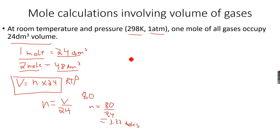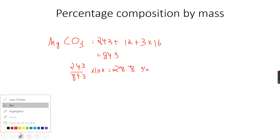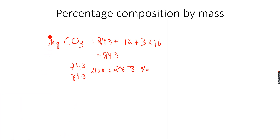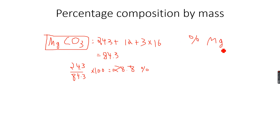Now let's move to percentage composition by mass. For example, we have the ionic compound MgCO₃ and we need to calculate the percentage by mass of Mg. Consider one mole of MgCO₃. The relative formula mass is the mass of magnesium (24.3) plus the mass of carbon (12) plus three times the mass of oxygen, giving a total of 84.3.